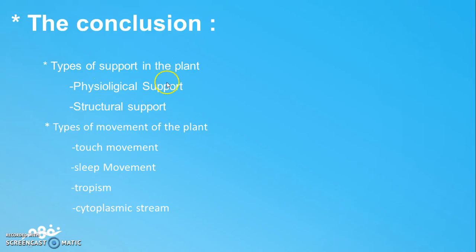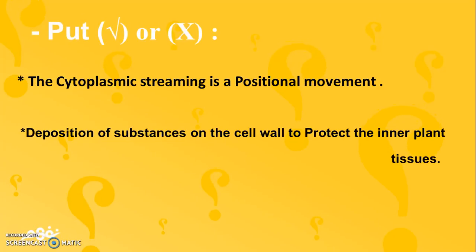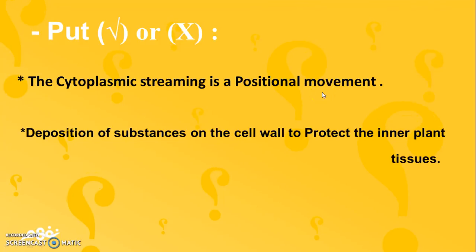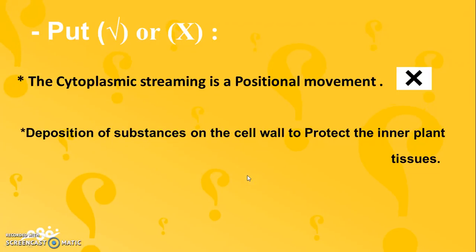To conclude our lesson: we talked about types of support — physiological and structural — and types of movement — touch movement, sleep movement, tropism, and cytoplasmic streaming. Now let's test ourselves. First, true or false: cytoplasmic streaming is a positional movement. That is wrong, because cytoplasmic streaming is a continuous motion, not a positional movement. Second: the deposition of substances on the cell wall protects the inner plant tissue — that is correct.